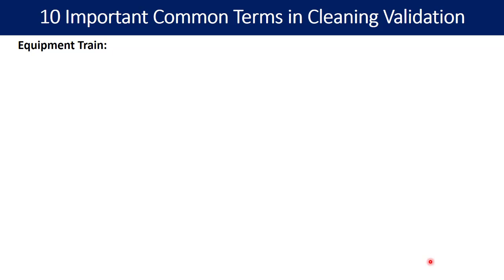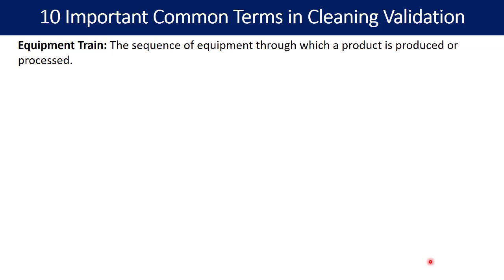The eighth term is equipment train: the sequence of equipment through which a product is produced or processed. For example, in manufacturing an oral solid dosage form, you may require a sieve for shifting, an RMG for granulation, a blender for mixing APIs and excipients, and compression machines. This entire sequence is called the equipment train used for manufacturing the product.